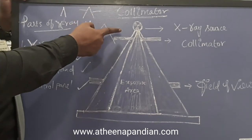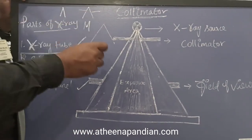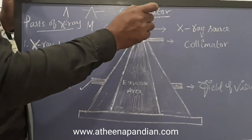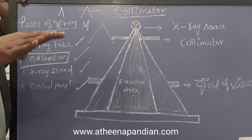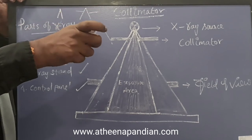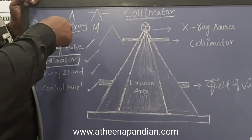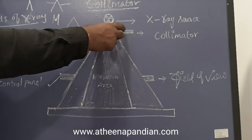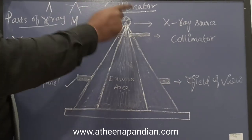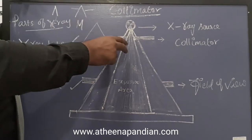The collimator is purposely helpful for finalizing the width of the X-ray source. The reason we control the width is: for example, if the doctor needs to take only the elbow, knee, or wrist region, a small amount of width is enough. But if the doctor asks for a chest X-ray, the width needs to be very high. During that time we need to adjust the collimator to increase the width of the X-ray source. Through this collimator we can adjust the width of the X-ray source.